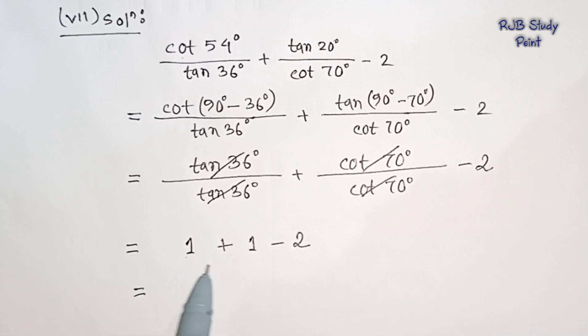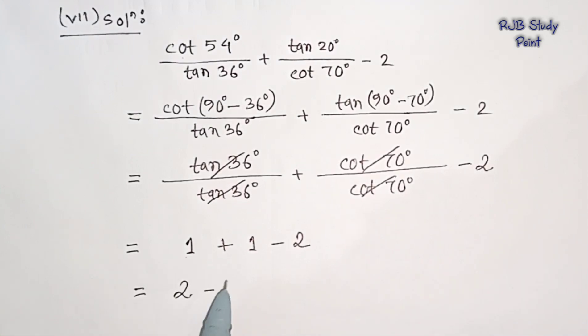1 plus 1 is 2, minus 2 is 0. The answer to question 7 is 0.